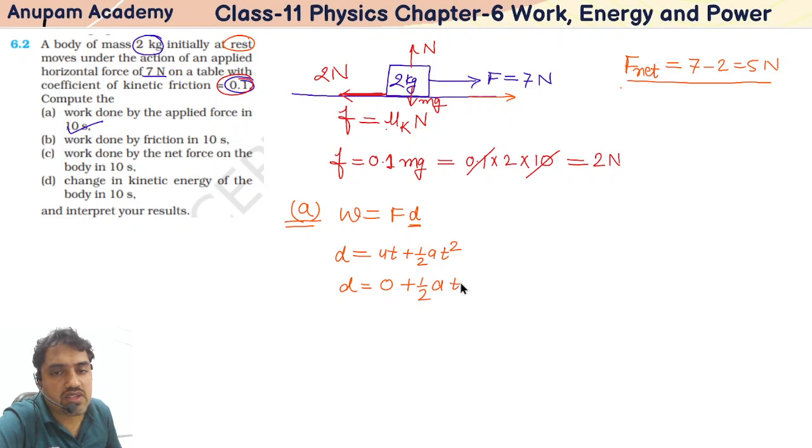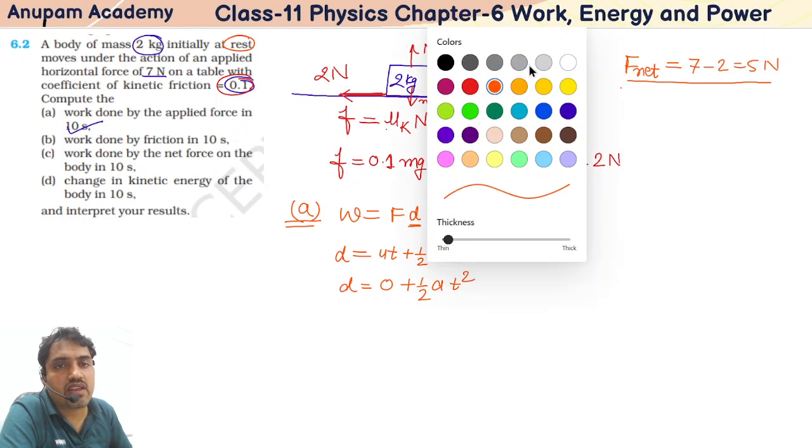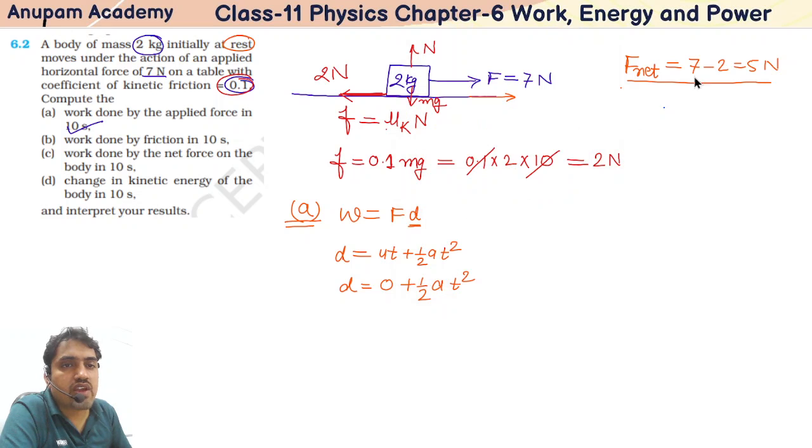We want to find this d because we want to find work done. This net force is equal to mass into acceleration, which equals 5. So 2 into a equals 5, so a equals 2.5 meter per second squared.